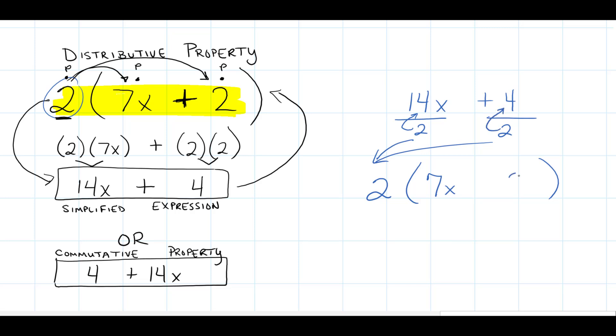We know that 2 can divide into 14x seven times, so we have 7x here. We know that 2 can divide into 4 twice. We know that those two terms can't go together, so we put a plus sign there showing that we want to combine them together, and this is our factored answer.